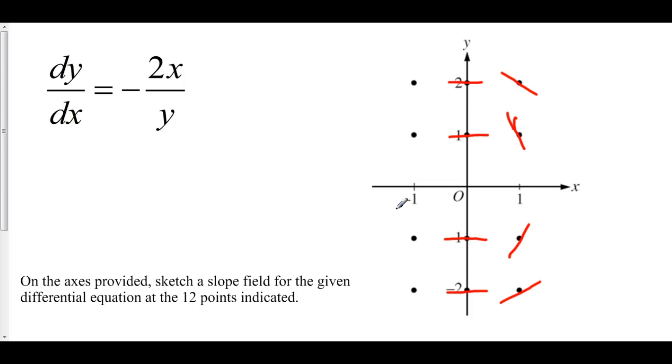Likewise, let's check out x equals negative 1, y equals 1. We get positive 2 over positive 1, that gives us a slope of positive 2. So that looks like that. Let's check out (-1, 2). That's 2 over 2, that's positive 1. That looks like this.